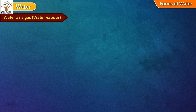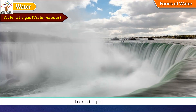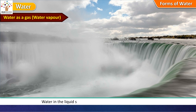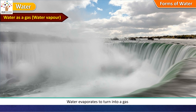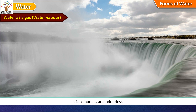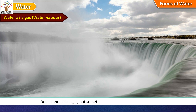Water as a gas — water vapor. Look at this picture of gas. You don't see anything because gas is invisible. Water in the liquid state changes into water in the gaseous state. Water evaporates to turn into a gas. Water as a gas is called water vapor. It is colorless and odorless. Odorless means not to have any smell. You cannot see a gas, but sometimes you can hear it and smell it.